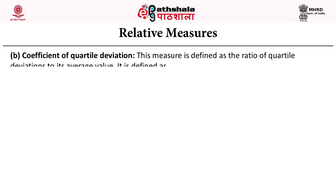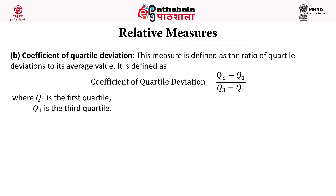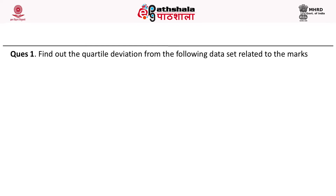The second relative measure is coefficient of quartile deviation. This measure is defined as the ratio of quartile deviation to its average value. It is defined as: coefficient of quartile deviation equals (Q3 minus Q1) divided by (Q3 plus Q1), where Q1 is the first quartile and Q3 is the third quartile. The definition of quartiles was already discussed in the previous module, so one can refer to it if there is any confusion.